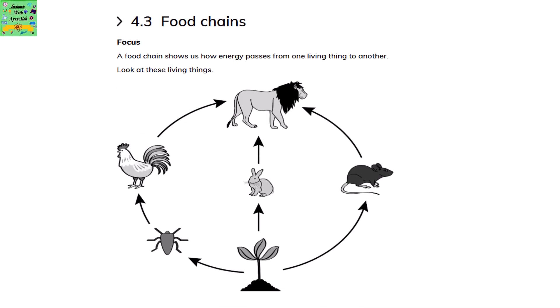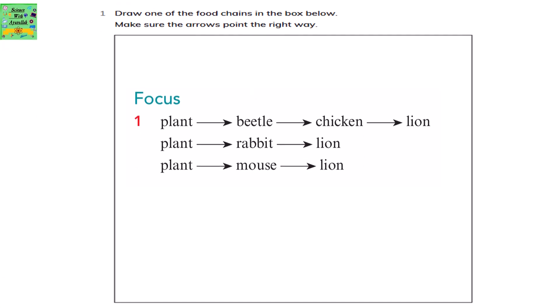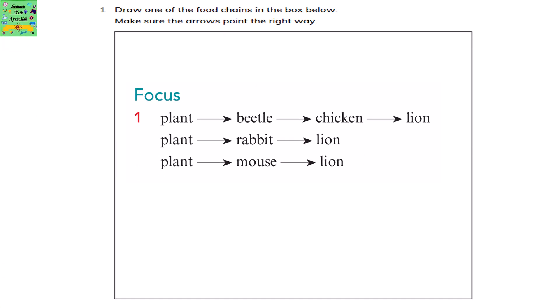Food chains. A food chain shows how energy passes from one living thing to another. Draw one of the food chains in the box below — make sure the arrows point the right way. Plant is eaten by a beetle, beetle is eaten by a chicken, and chicken is eaten by a lion. Or: plant eaten by a rabbit, rabbit eaten by a lion.